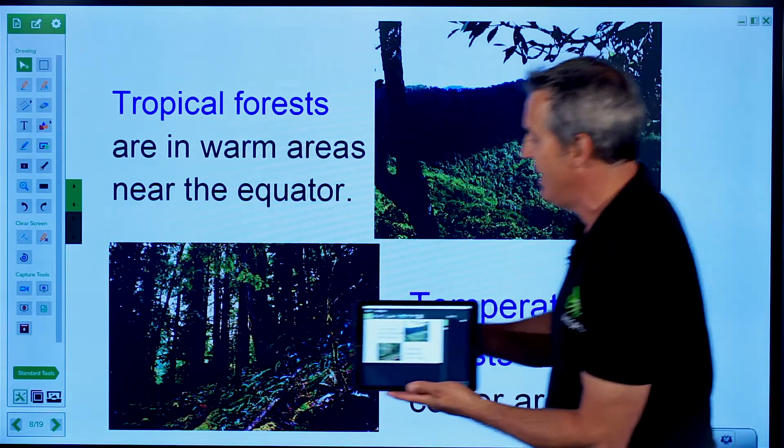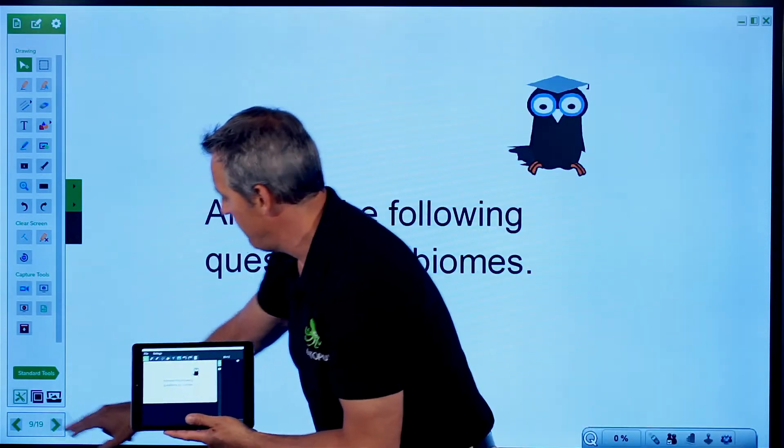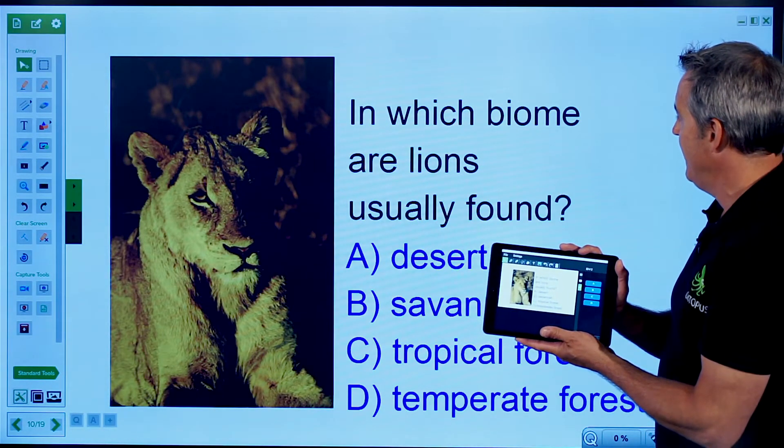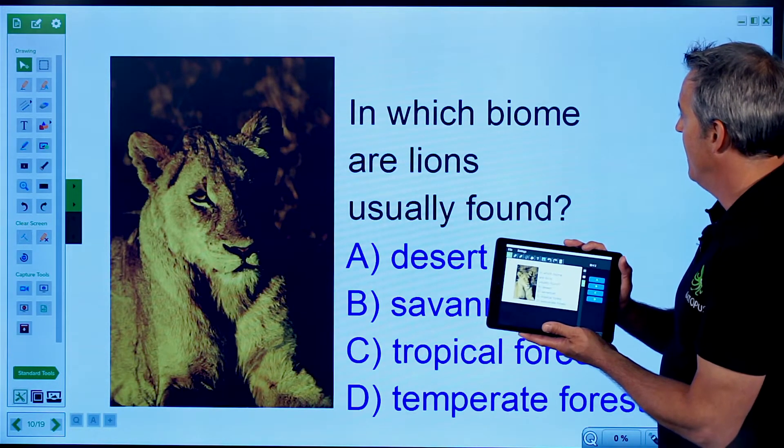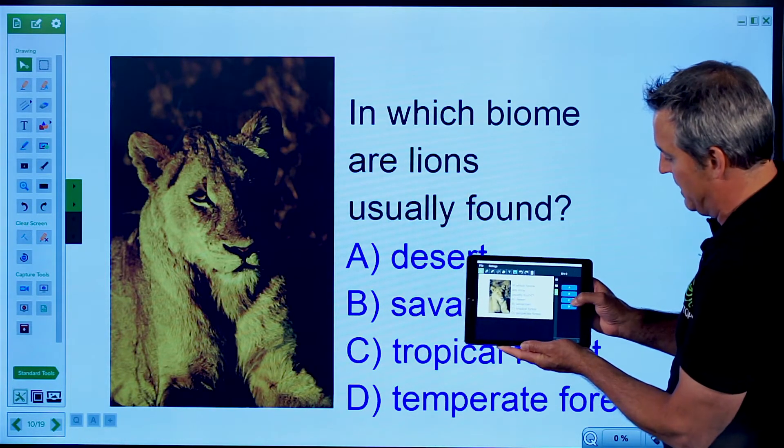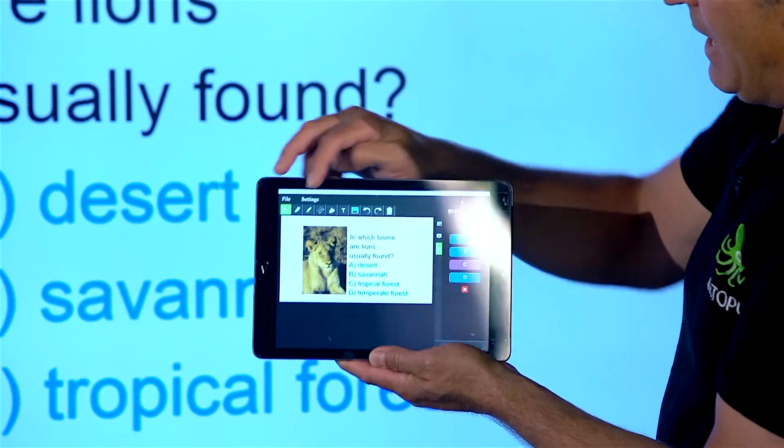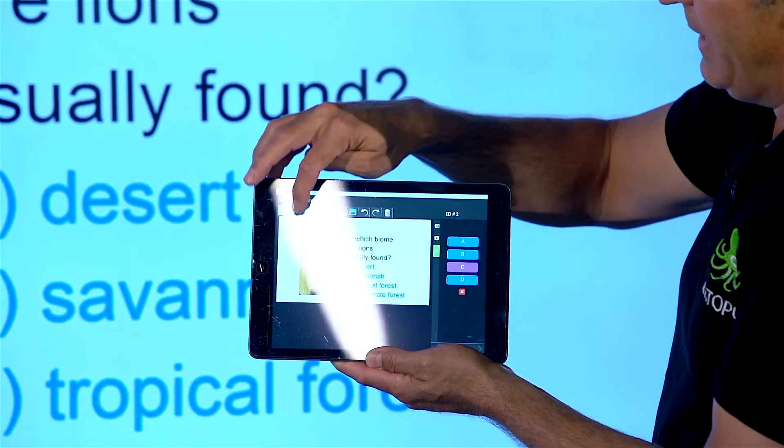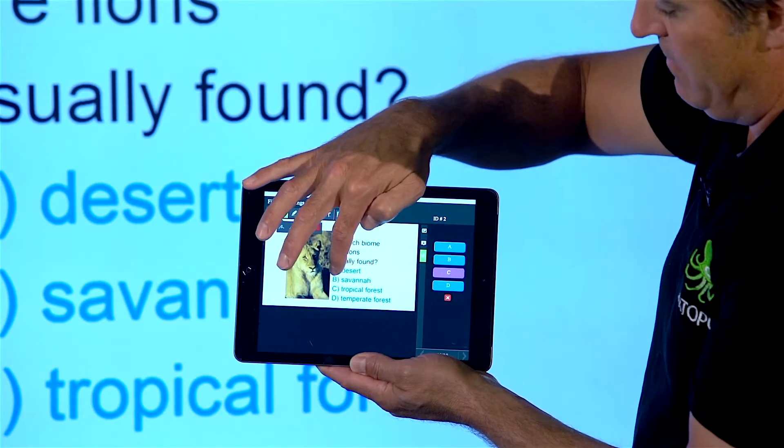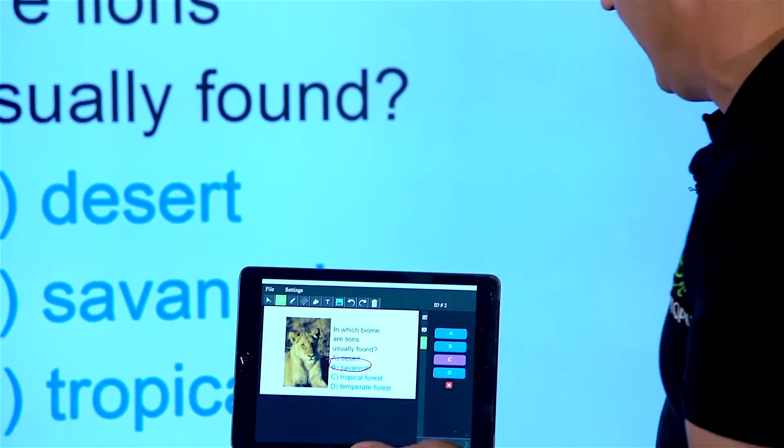So if your students have access to devices, we can do a lot of neat things with the application. And actually, if I wanted to pose a question here: In which biome are lions usually found? Deserts, savanna, tropical forests, or temperate forest? Students could choose an answer there and they can get immediate right or wrong feedback on their device. They could also highlight answers. So if I wanted them to collaborate or give explanation, I might have them circle the answer there and share that back to the group.